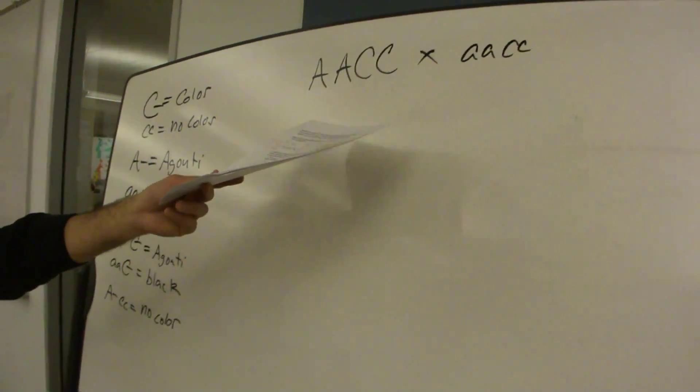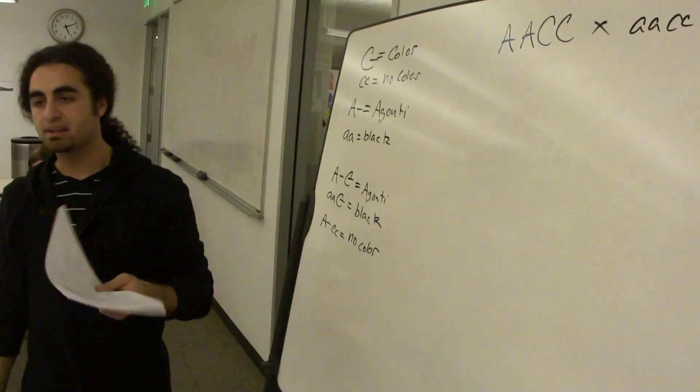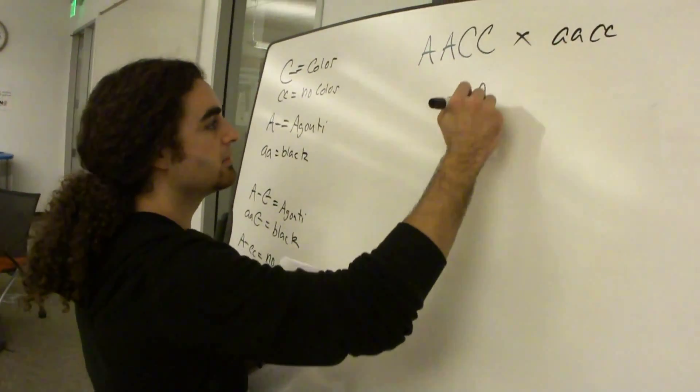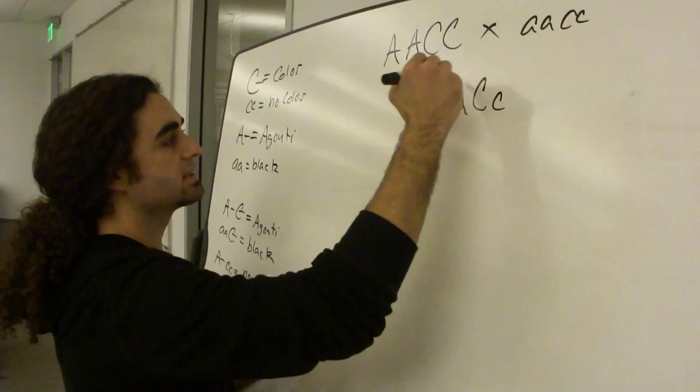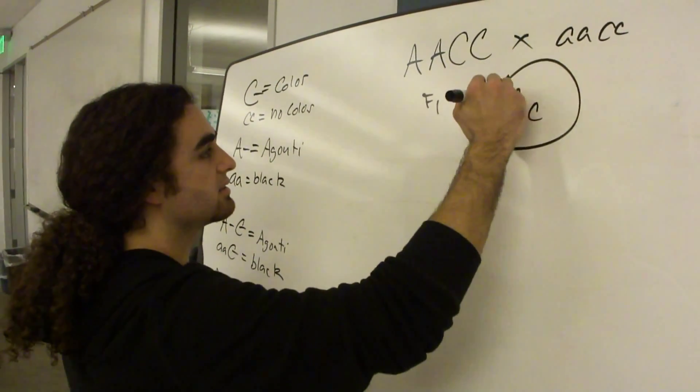Anytime we see true breeders crossing, we're going to get what? Yeah, so our dihybrid. We're going to get heterozygous, you said, right? Okay, so this is our F1, and then it tells us to get our F2, so we're going to self-cross that.